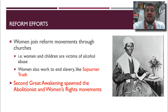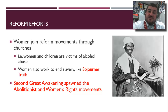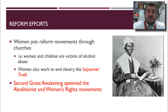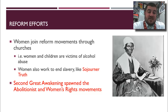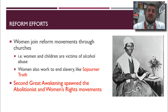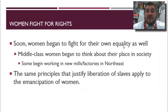What do women do then? A lot of them join the reform efforts through churches. Women and children are victims of alcohol abuse, so they join the temperance movement. Women also work to end slavery, like Sojourner Truth, one of the great women who worked to end slavery. The Second Great Awakening is spawning many different reform movements: the temperance movement, the education movement, the abolitionist movement, and the women's rights movement — all coming out of the Second Great Awakening in some way or another.